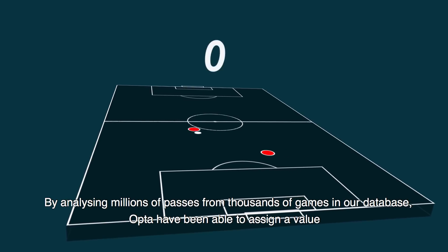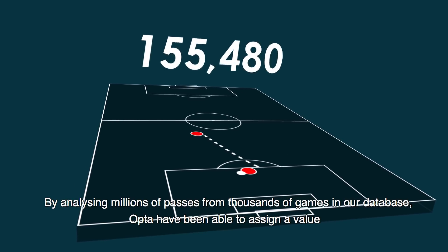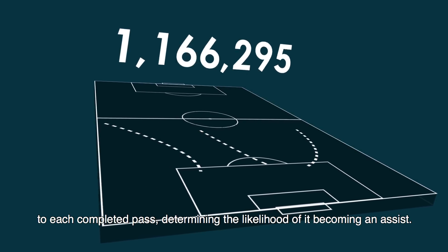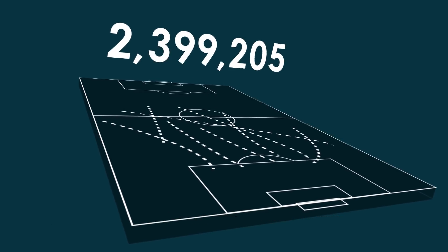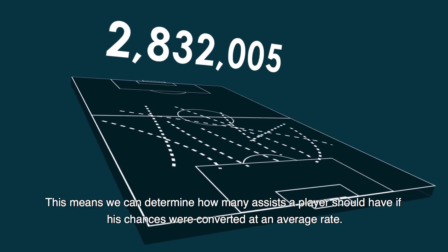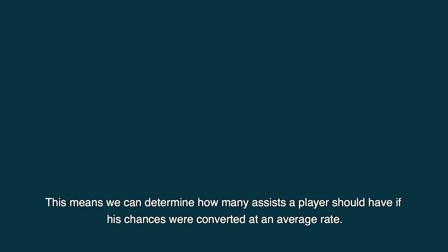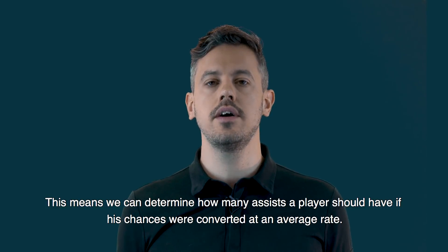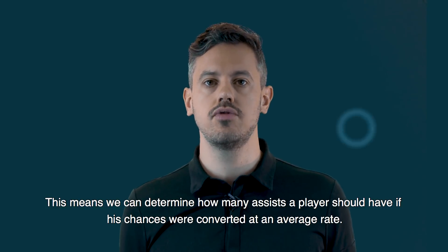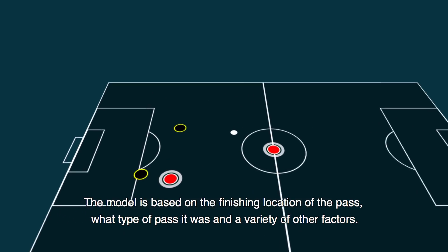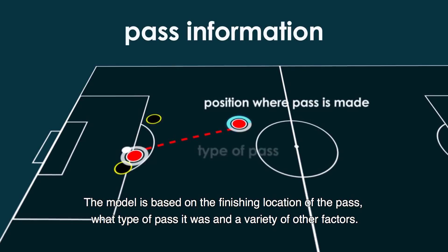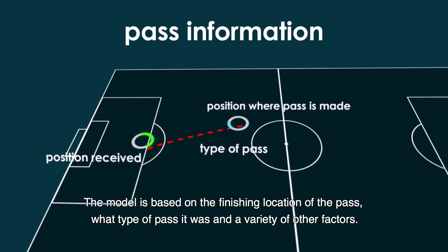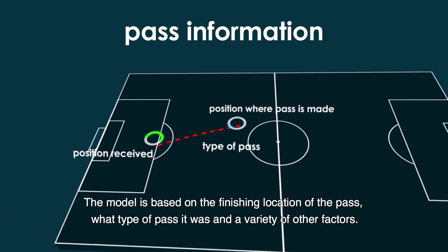Using their database, Opta have been able to assign a value to each completed pass, determining the likelihood of it becoming an assist. This means we can determine how many assists a player should have if his chances were converted at an average rate. The model is based on the finishing location of the pass, what type of pass it was, and a variety of other factors.